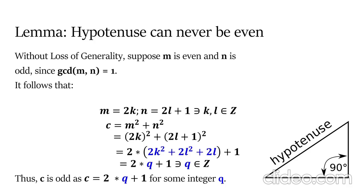In blue, we can change this notation to the letter q for some integer q. And thus, c is odd as it can be represented as 2 times some integer plus 1.